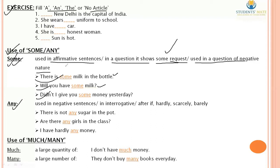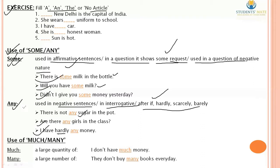Now let's talk about 'any'. 'Any' is used in negative sentences and interrogative sentences. For example: 'There is not any sugar in the pot' (negative). 'Are there any girls in the class?' (interrogative). 'I have hardly any money' — when words like 'hardly' are used, 'any' can also be used.